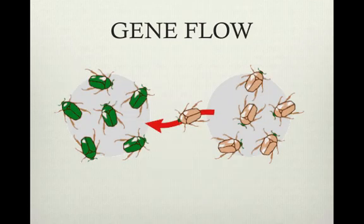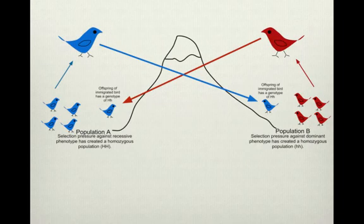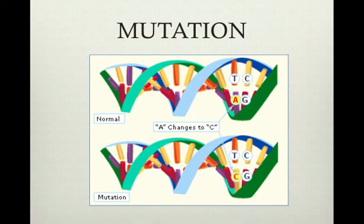Gene flow is when a population interbreeds with another. New individuals migrate into a population and bring new genes in. The two effects of gene flow are an increase in genetic variation and it makes adjacent populations more like one another. Mutations can change the amino acid sequence or change the DNA, providing the raw material for evolution. Mutations don't usually alter the overall frequency of an allele. Inherited variations are how natural selection works.